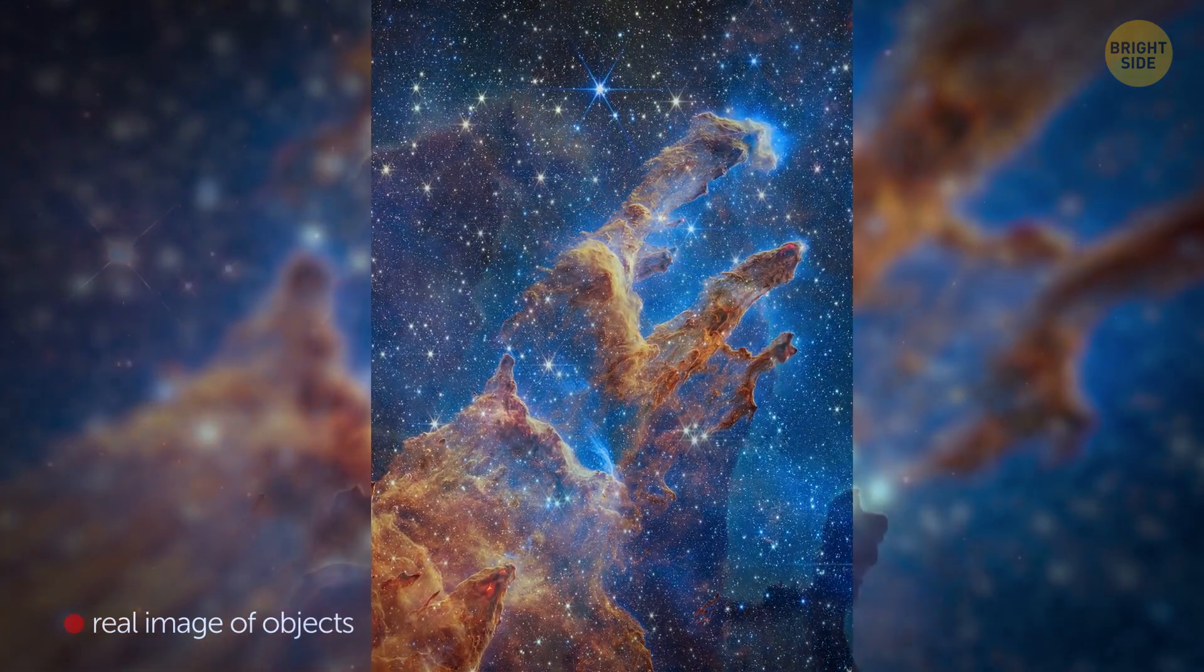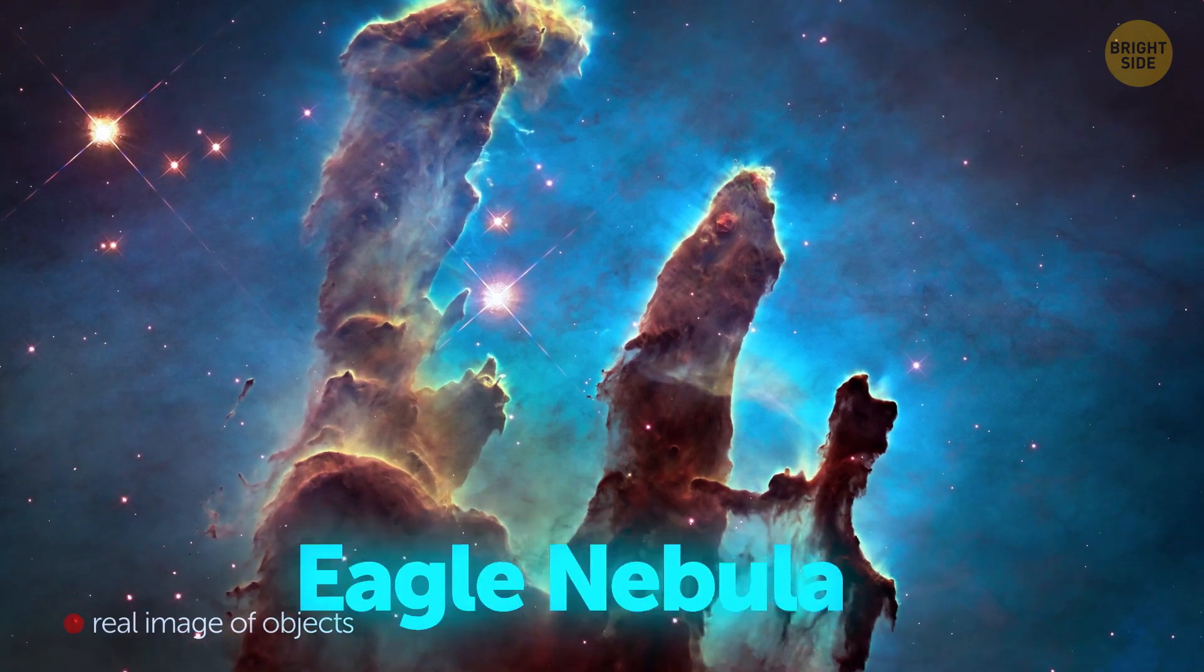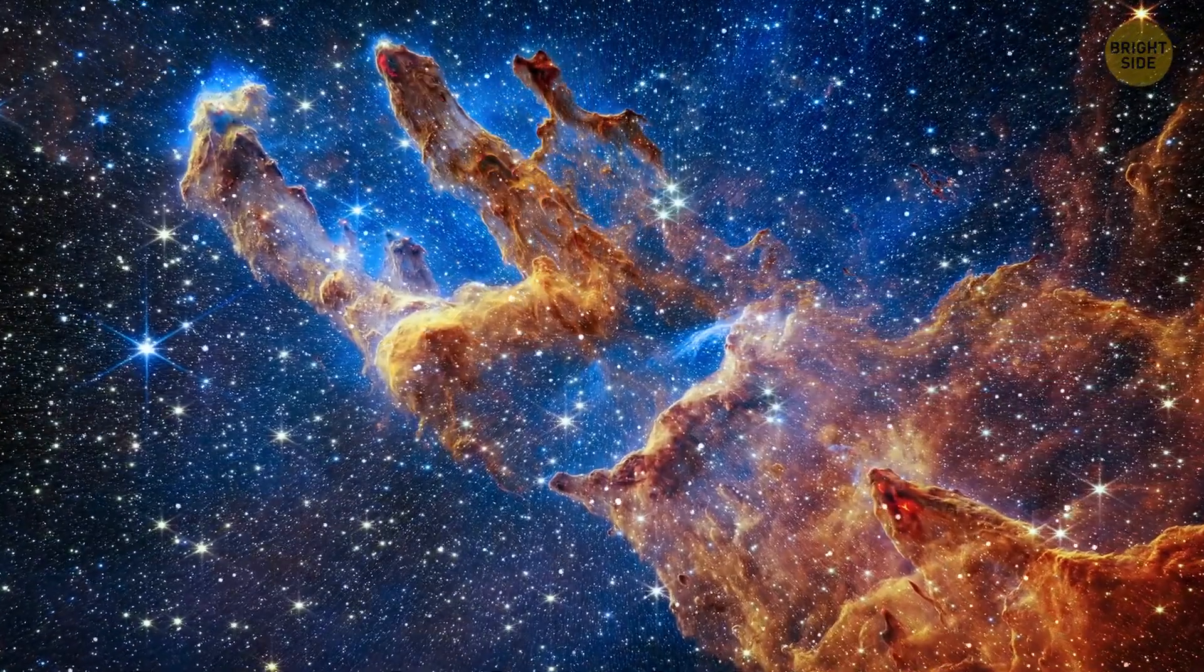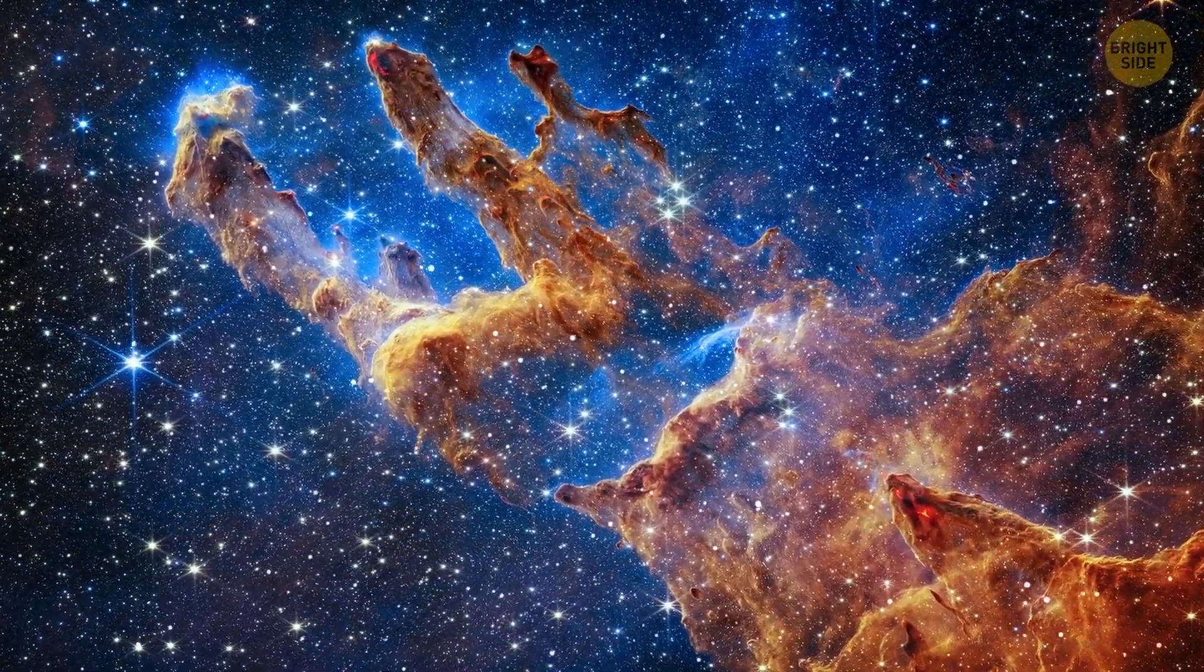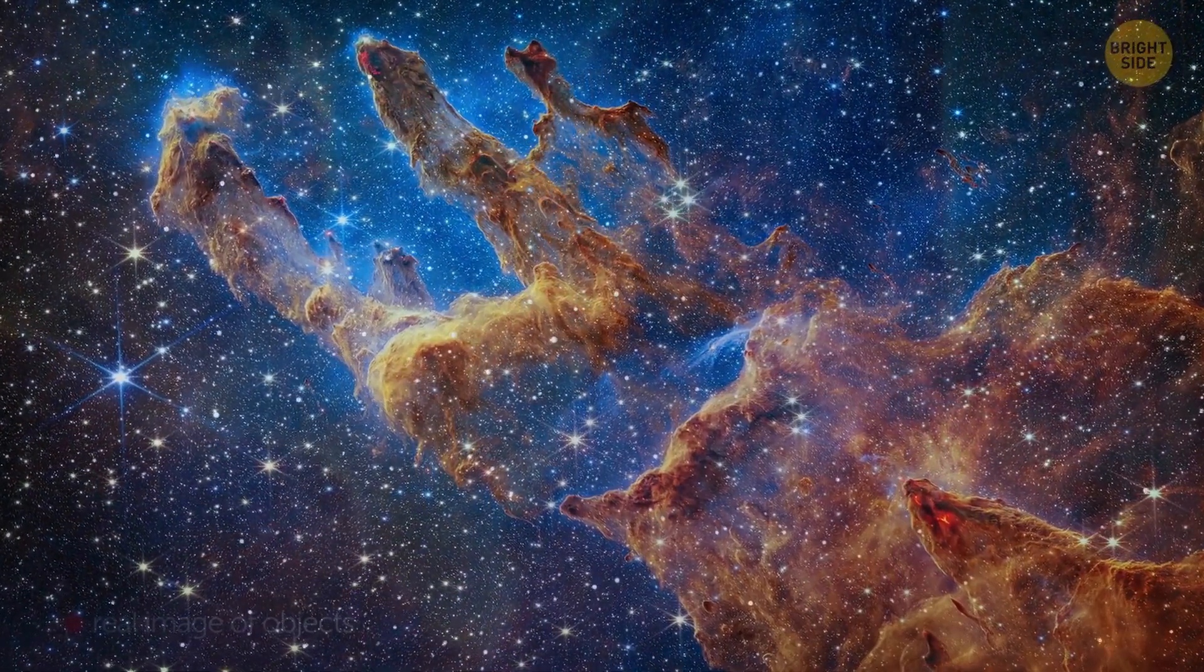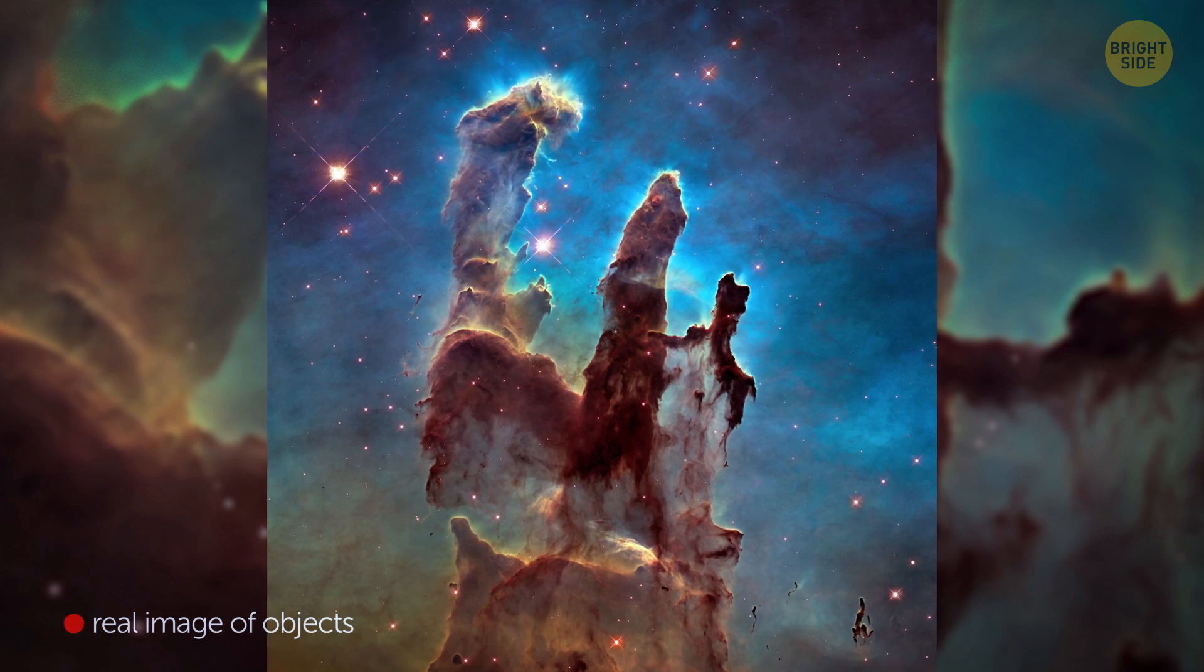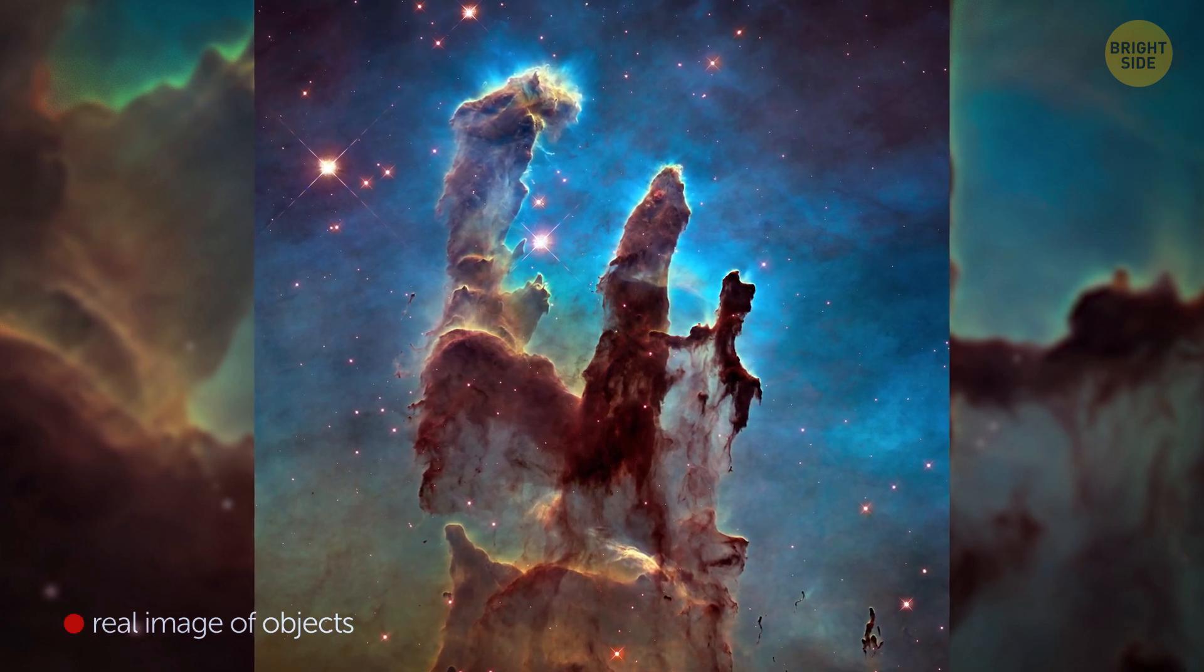They're located 7,000 light years away from Earth in the Eagle Nebula. That's a young cluster of stars just 5.5 million years old. On a space scale, they're just babies. Once, the Hubble Space Telescope managed to take an image of several dark silhouettes near the nebula center.